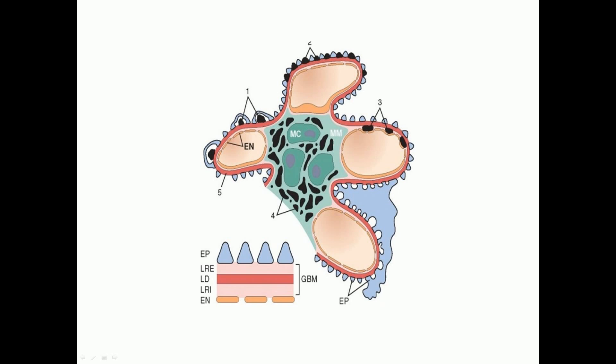In the diagram, the blue layer on the outside represents the visceral epithelium, also known as podocytes. The orange layer next to it is the glomerular basement membrane, and the layer marked EN is the capillary endothelium. The black deposits marked as number one are present below the visceral epithelium — these are the sub-epithelial deposits characteristic of membranous nephropathy.